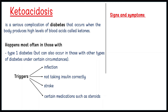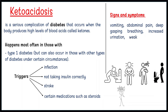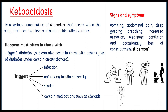Signs and symptoms may include vomiting, abdominal pain, deep gasping breathing, increased urination, weakness, confusion, and occasionally loss of consciousness. A person's breath may develop a specific fruity smell. Onset of symptoms is usually rapid.